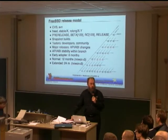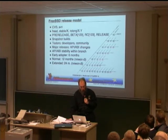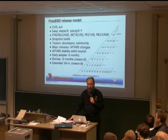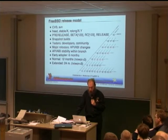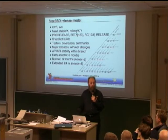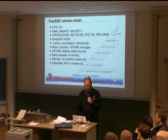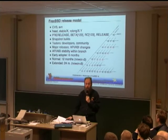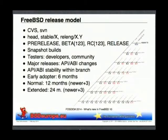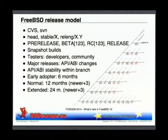The support that the FreeBSD project provides for releases depends on whether a release is tagged as early adopter, normal, or extended support. Early adopter releases are the .0 releases — they only get six months of support. Normal releases will be supported at least for 12 months, or at least until a newer stable release has been out for three months. So you get some time to upgrade to a newer release before support for your old release stops.